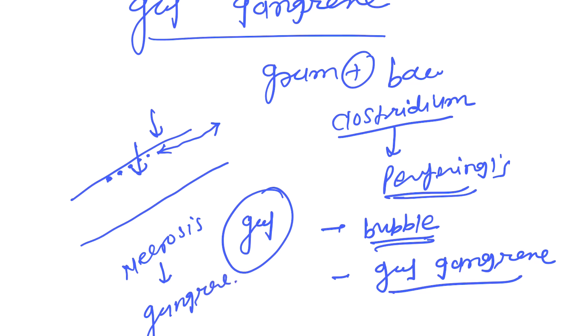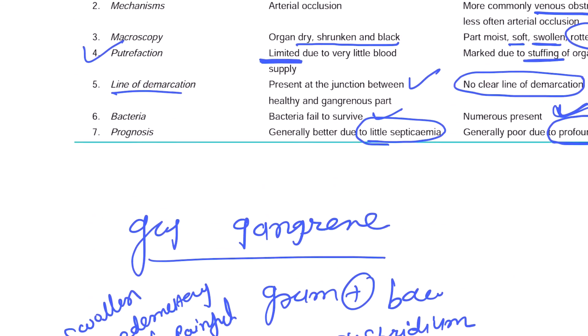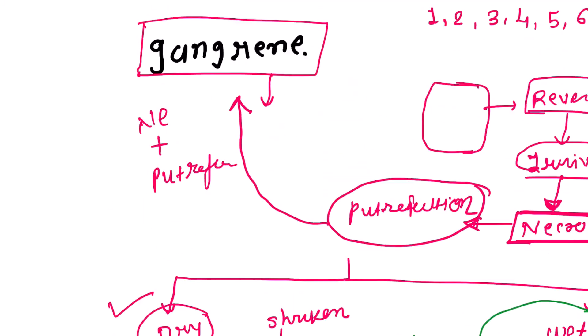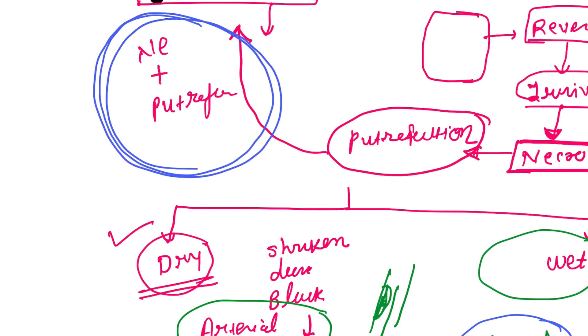When gas gangrene occurs, the affected parts become swollen and edematous, and it is very much painful. The gas bubbles are present — that is why it is known as gas gangrene. Gangrene is nothing but the progressive stage of tissue damage: necrosis followed by putrefaction. Thanks for listening.